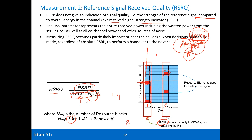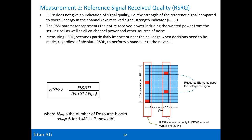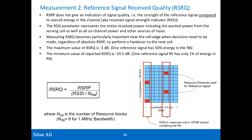Measuring RSRQ becomes important at the cell edge and is used for handover decisions. The range of RSRQ is interesting: the maximum value is minus 3 dB. This is because if there is no other signal in the resource block — no power except the reference signals — the RSRQ will be the power of the reference signal divided by the total power in the resource block, which is one half, or minus 3 dB. So minus 3 dB is the maximum value of RSRQ.